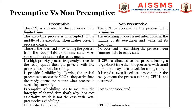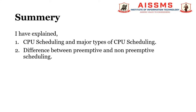Lastly, in primitive CPU scheduling, CPU utilization is high, whereas in non-primitive CPU scheduling, CPU utilization is low. To summarize, in this video lecture I have explained CPU scheduling and the major types of CPU scheduling, followed by the difference between primitive and non-primitive CPU scheduling types.